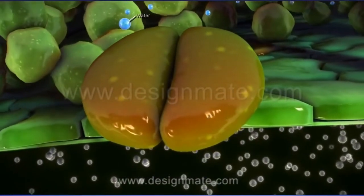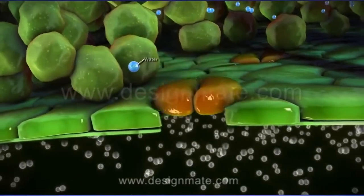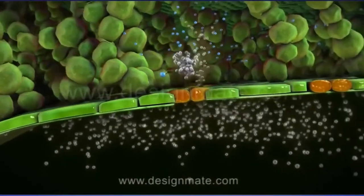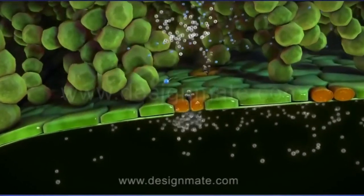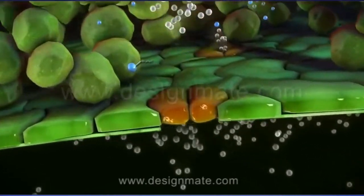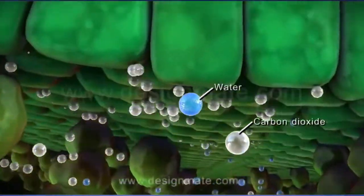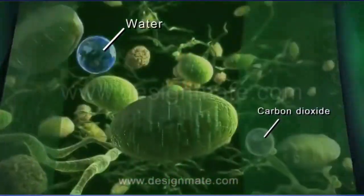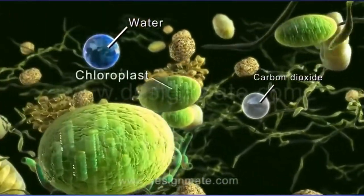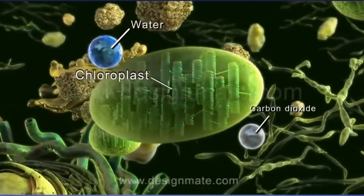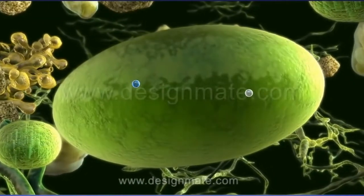A leaf absorbs carbon dioxide from the environment through these stomata, which after passing through air spaces enter into the chlorophyll containing cells. Both water and carbon dioxide molecules are finally absorbed by the chloroplasts.